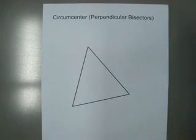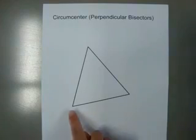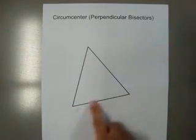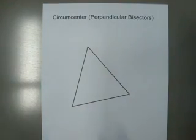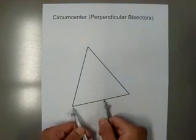So, a perpendicular bisector would be going through a side. Using this as my first side, I am going to open up my compass more than halfway.